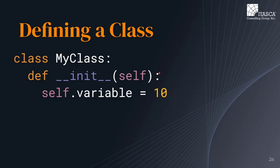Within all functions of a class in Python, a special variable called self is passed. Self is basically just a reference to the specific object so that the class blueprint knows which object it's working with. So for example, in this example, whenever my class is initialized, an inner variable — the self dot variable — is initialized to contain a value of 10.